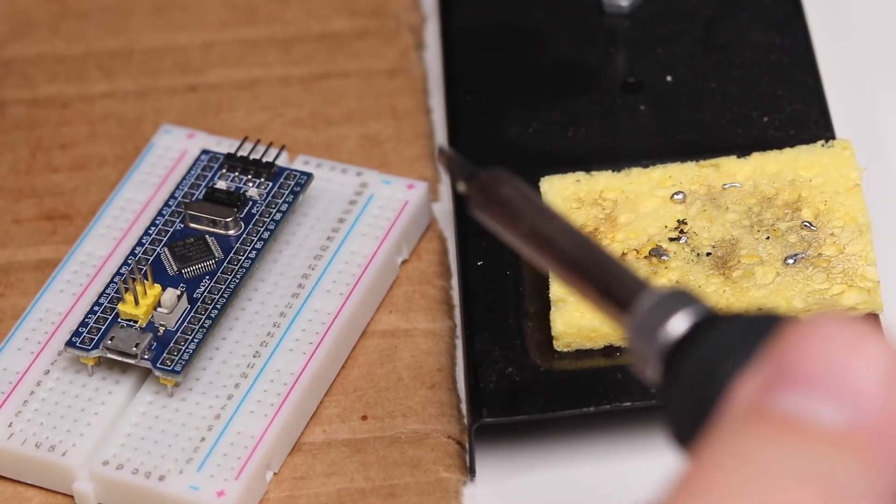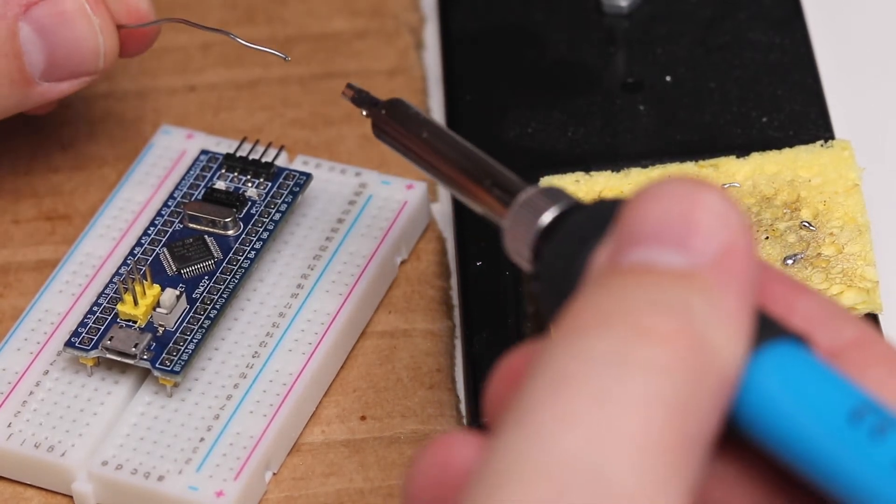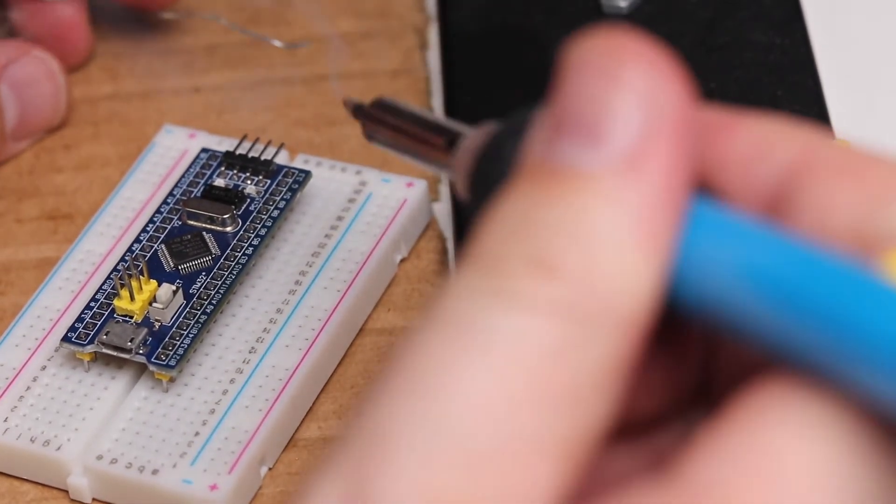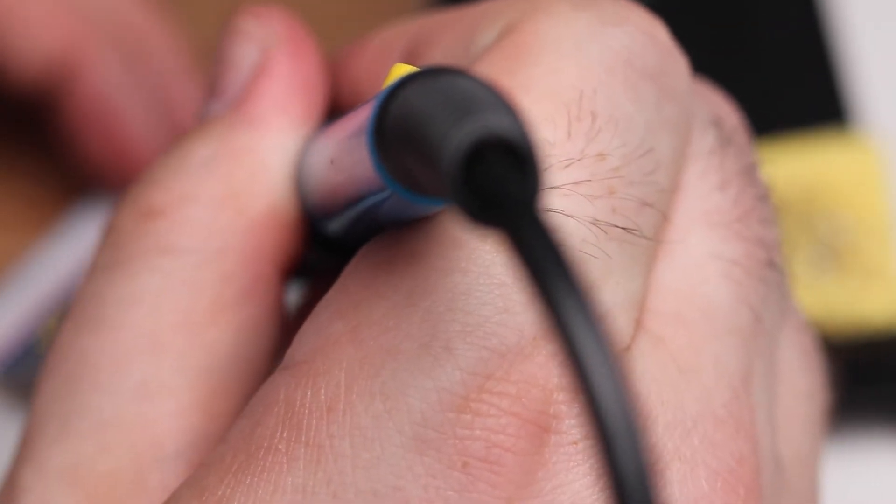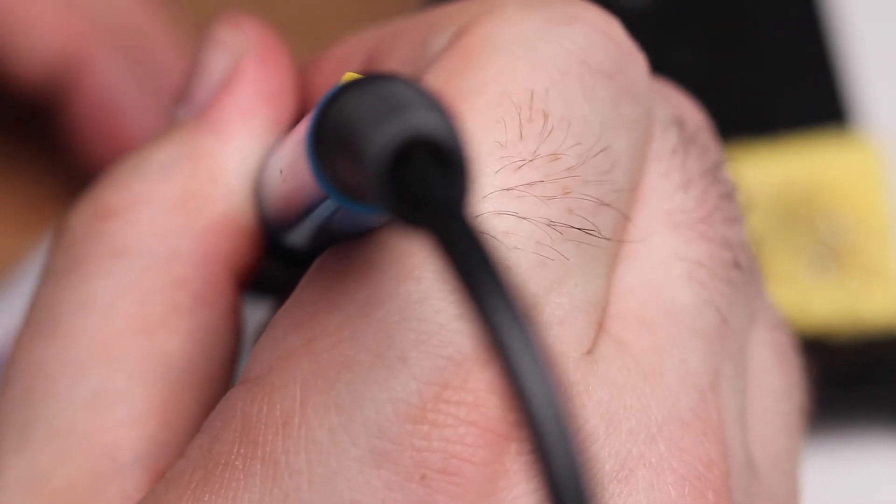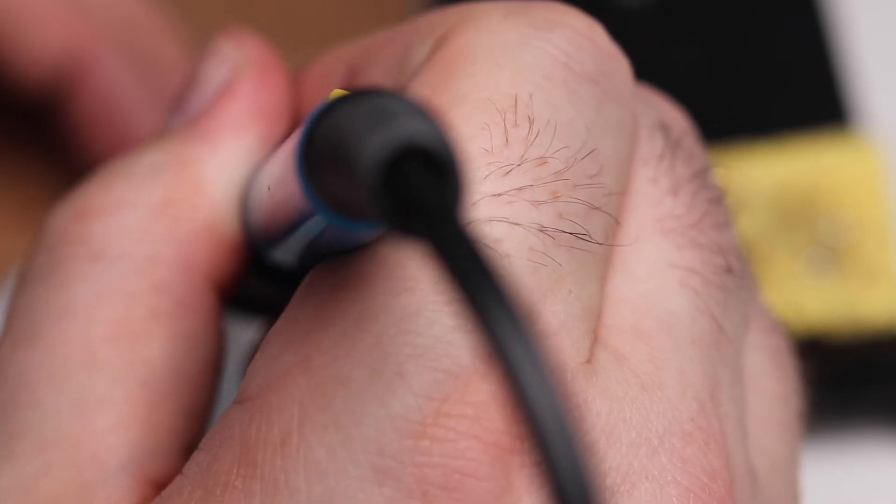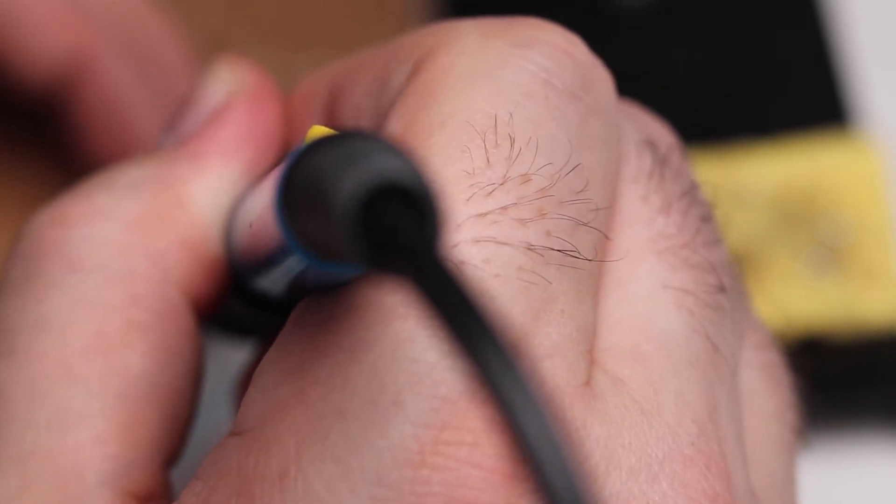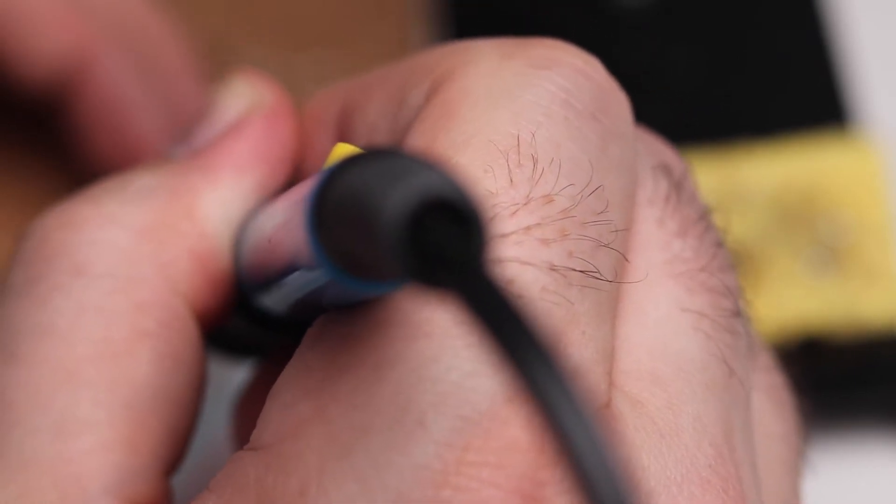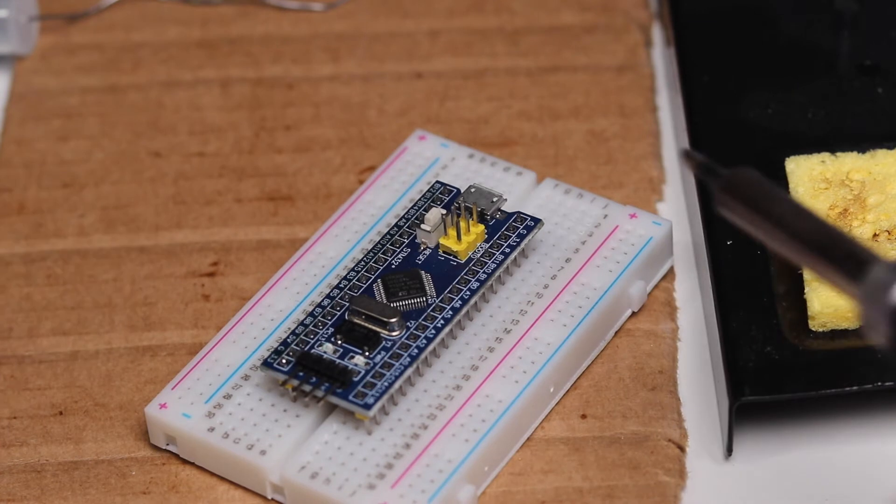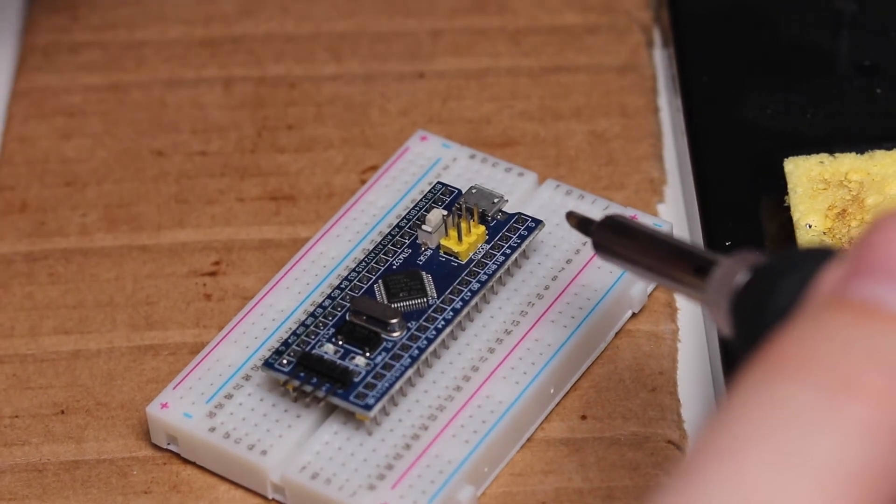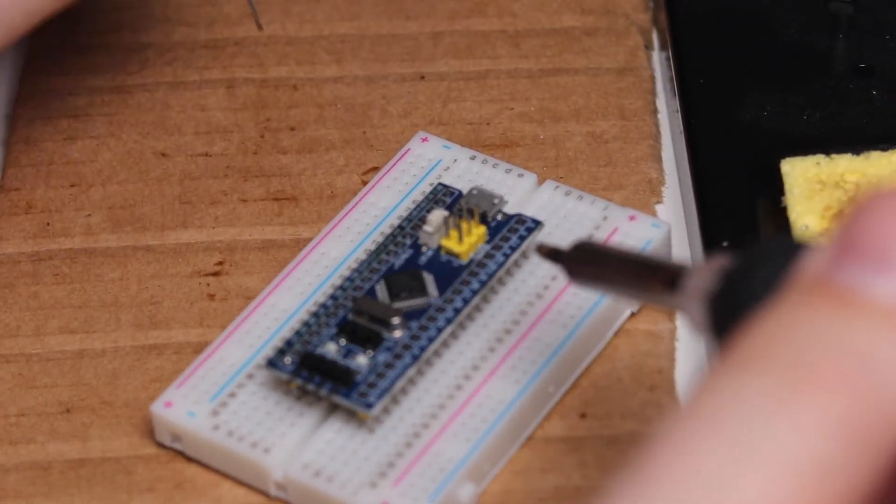Then put some more fresh solder on it so it's wet and then I'm just going to go in between each of these until you can kind of see they shimmer a little bit when they melt. It only takes about a second. You always want to pick the biggest tip that you have.